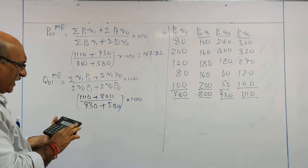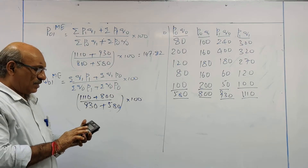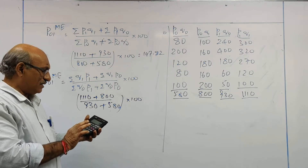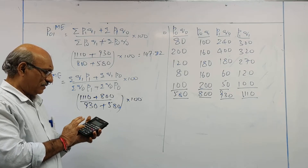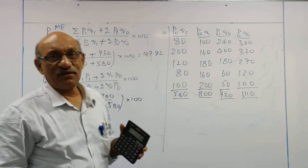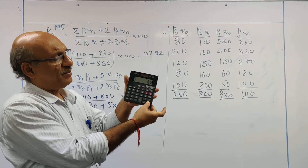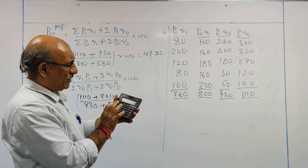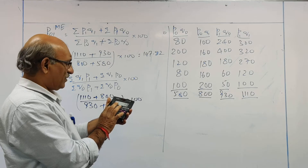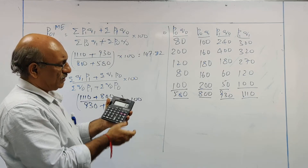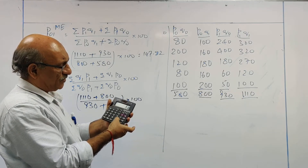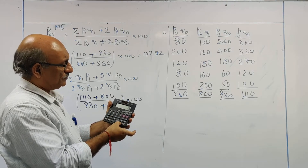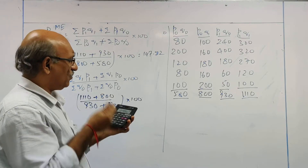Add the denominator values: 930 plus 580, store in memory using M+. Numerator: 1110 plus 800. Divide by MRC, then into 100. The result is 126.49.